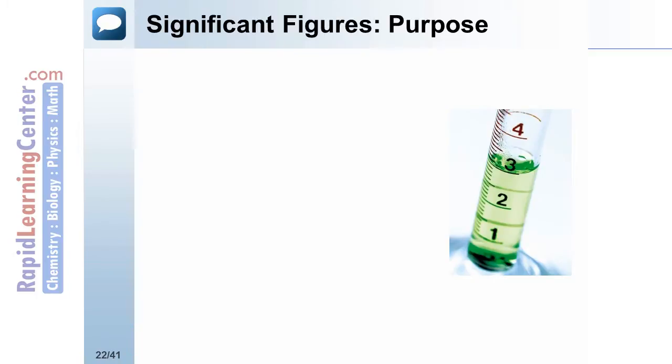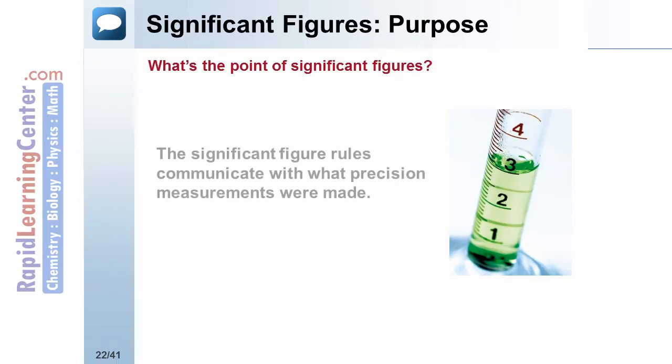Most people ask why we need to worry about significant figures. The significant figure rules allow us to perform calculations and give results so that everyone that sees them understands what uncertainty is in that reading. They know which decimal places are certain and which are estimated.